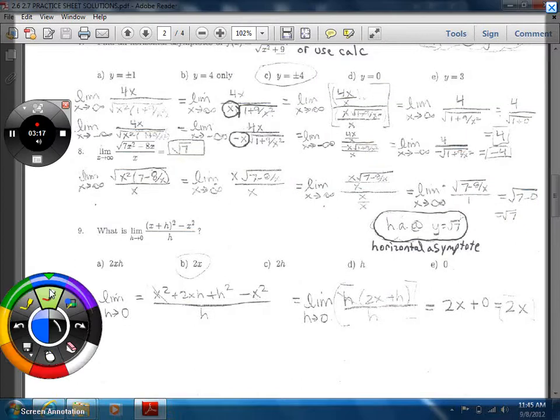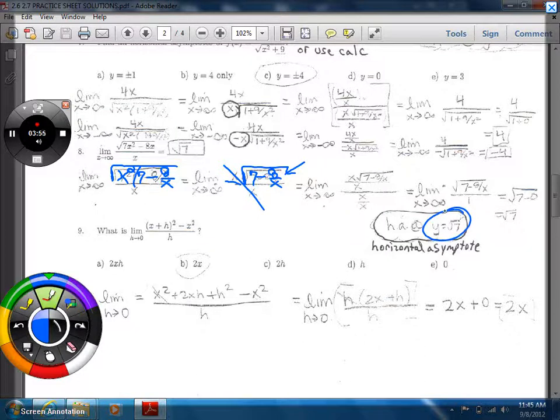Similar deal on this one, if you want to factor out the x squared from under the radical, you can factor out the x squared, and then it leaves you with seven minus eight over x, that'd be the same thing. And then that'll allow the x to come out from the radical. And then that leaves you with seven minus eight over x under the radical. And so then the x's cancel out. And you could let x go to infinity at this point. And then it would be radical seven, which will end up being your horizontal asymptote as well.